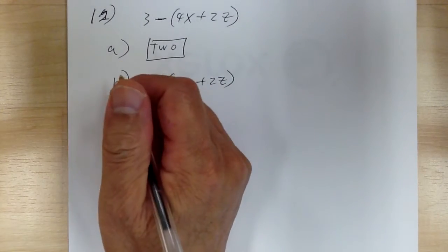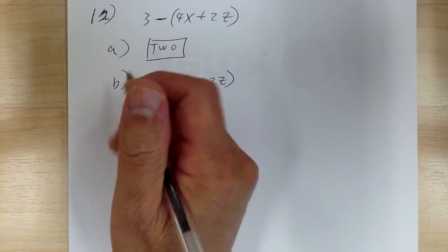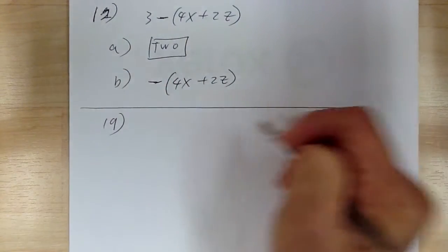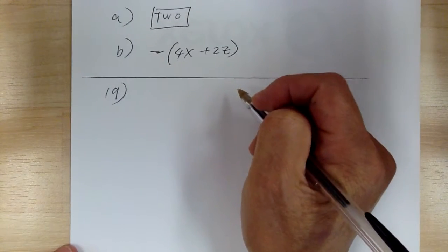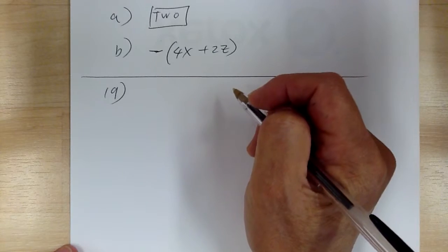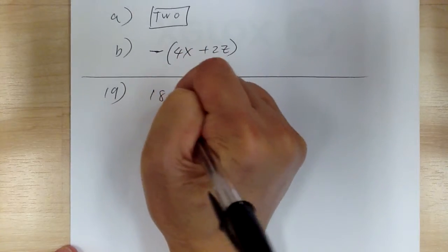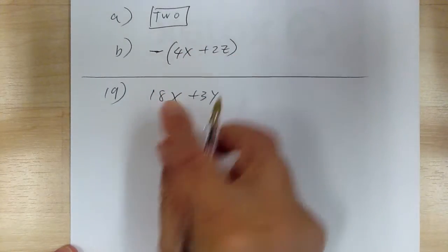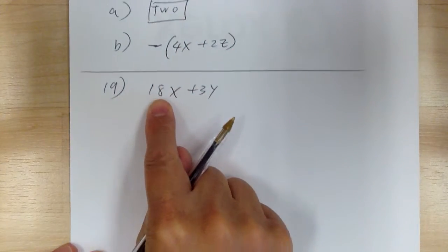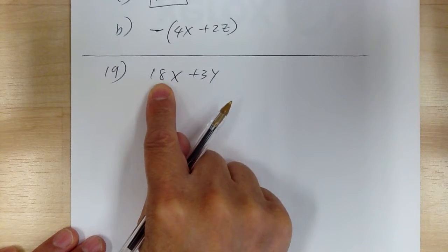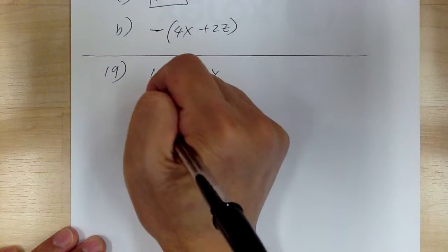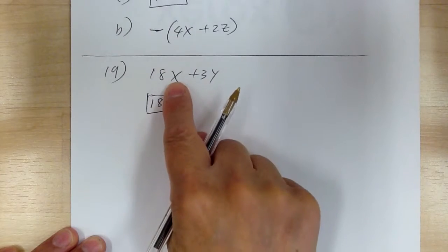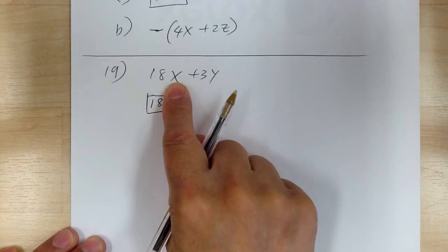Number 19: write the numerical coefficient of the first term. You have 18x plus 3y. The first term is 18x, and the numerical coefficient is the number in front, so it's 18.